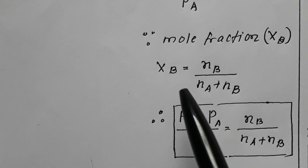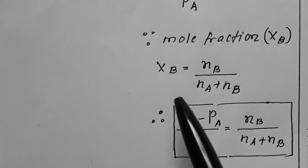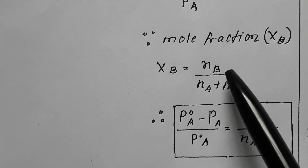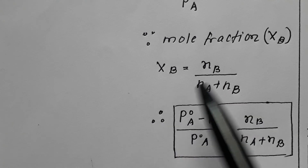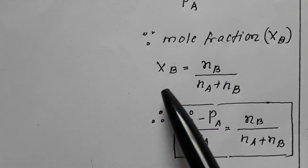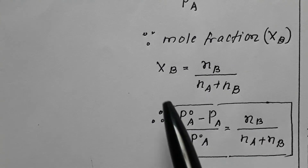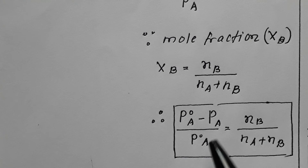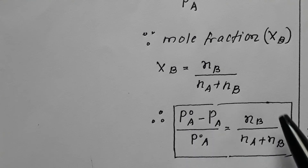XB is the mole fraction of solute. We know that mole fraction of solute XB equals NB divided by (NA plus NB), where NB is moles of solute and NA is moles of solvent. Substituting this into the equation, relative lowering of vapor pressure (P0A minus PA) upon P0A equals NB upon (NA plus NB).